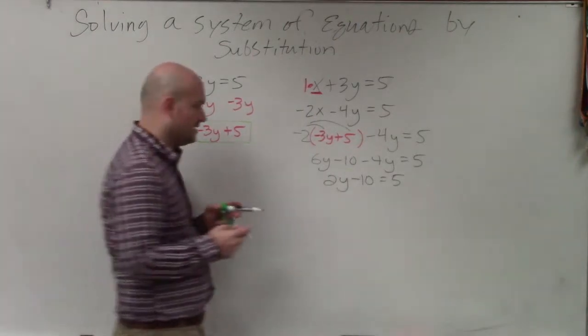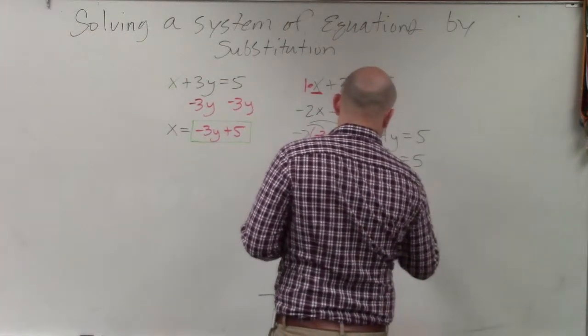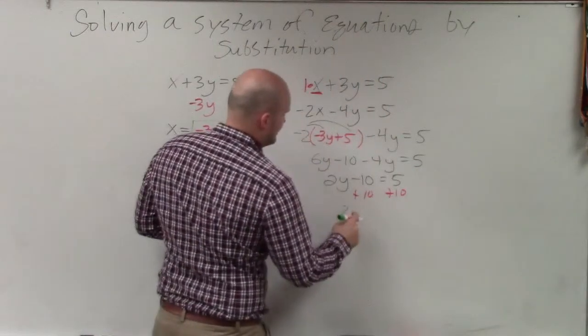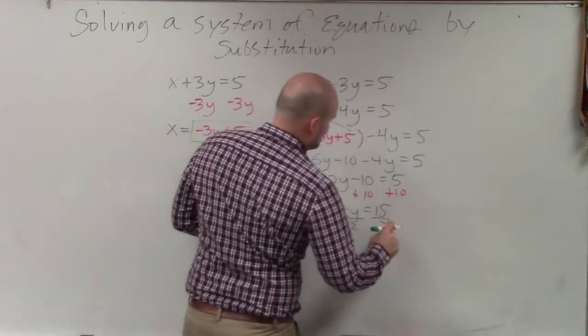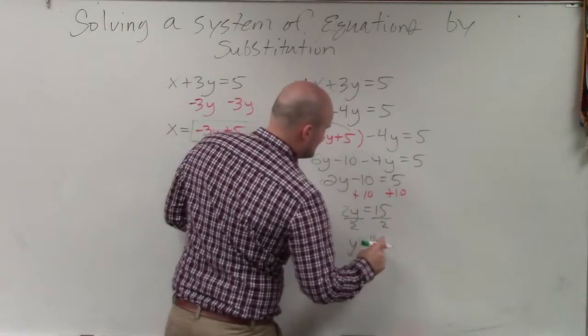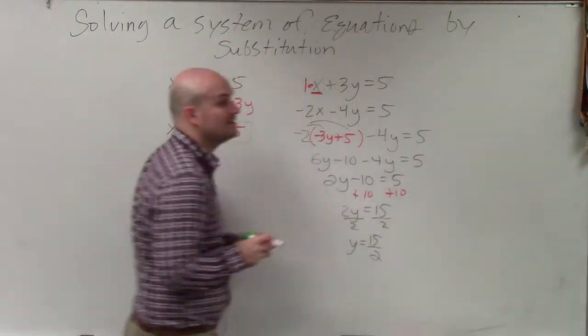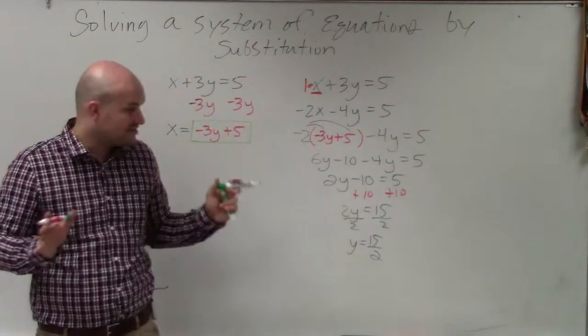And now I can just go ahead and solve. So now 2y is equal to 15, divide by 2, divide by 2. y equals 15 over 2.